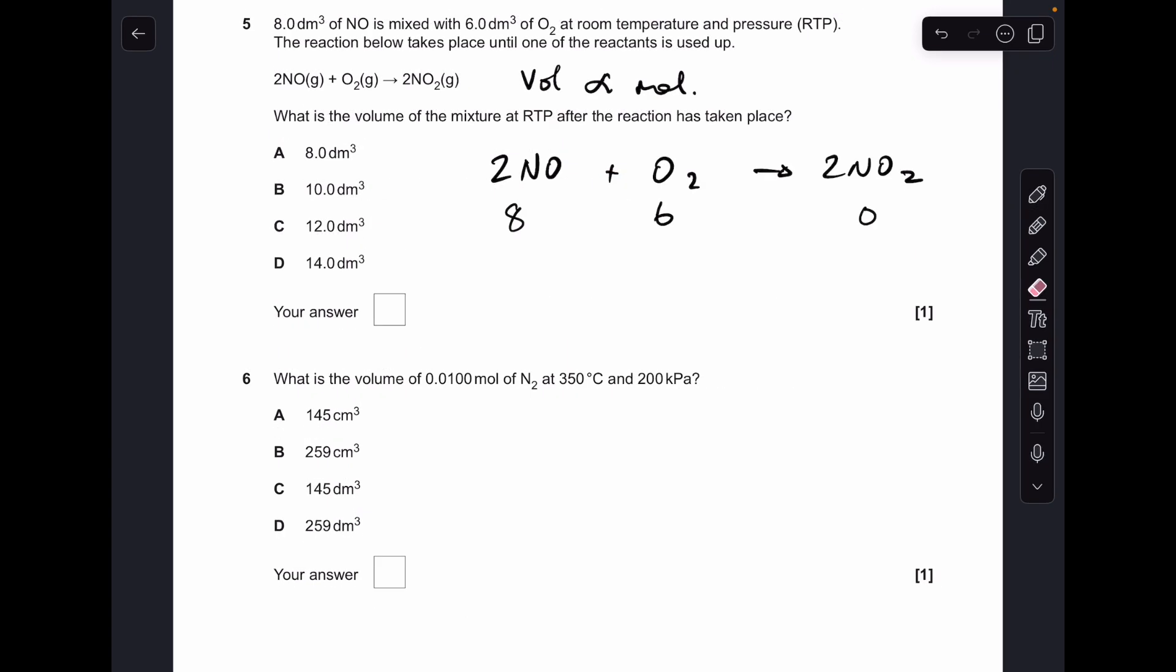Number five, the important thing to say at the very start is that the volume is proportional to the moles. So I've written up the equation again and the volumes we've been given in the question: we've got 8 dm cubed of NO, 6 dm cubed of O2, and obviously at the start we won't have any NO2. So the first thing we've got to do is establish which is the limiting and which is the excess reagent so we can work out how much product we're going to make.